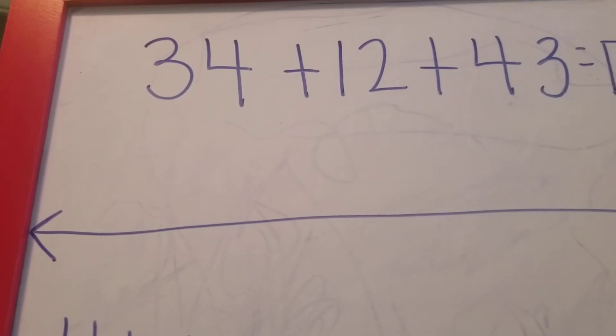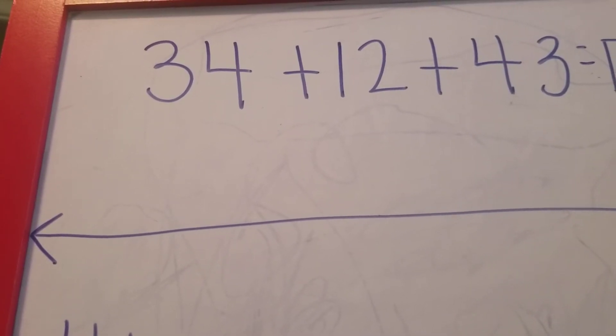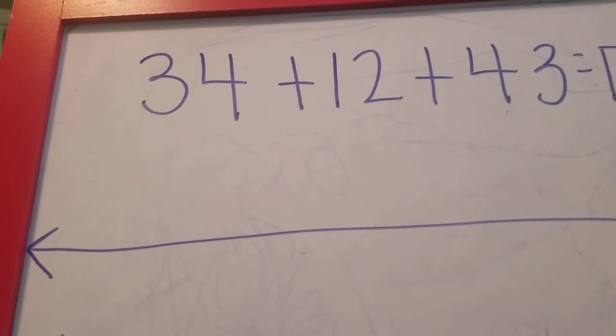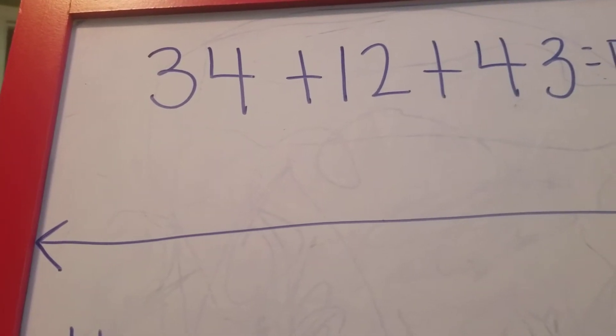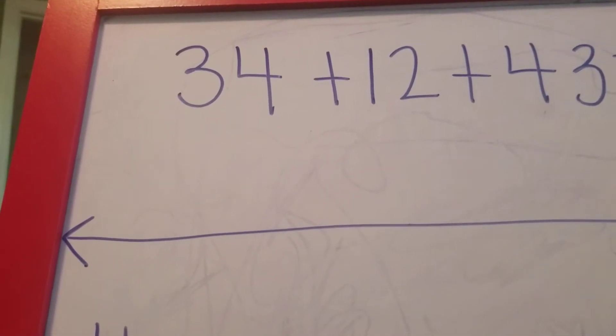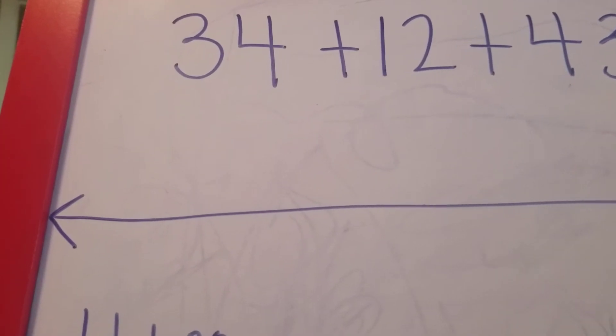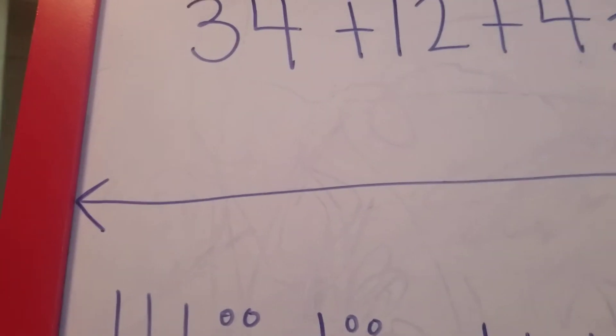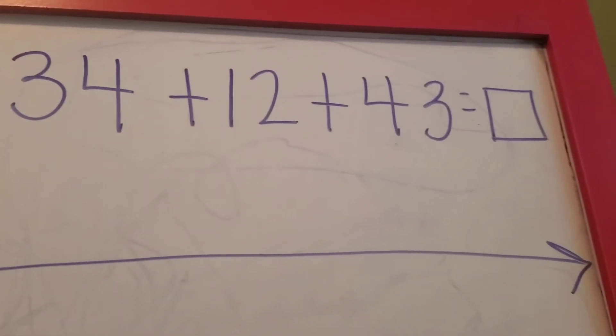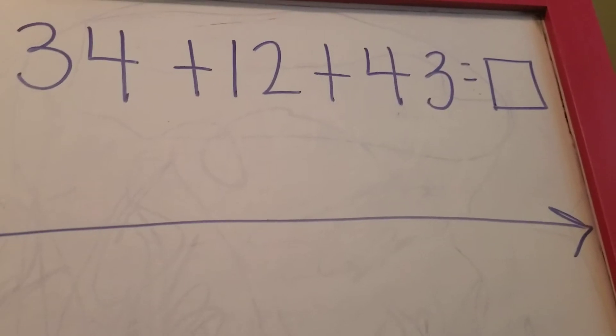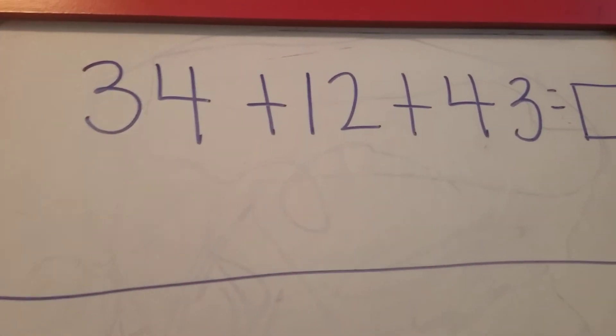To make this something that we could do in the real world, I like to think about things that you might buy. Think about if you have maybe 34 pencils for a couple different classes. I'm going to start with 34 and put it right here on my number line. Remember it doesn't matter which number we start with when we are adding.